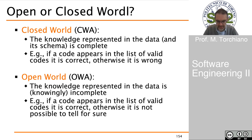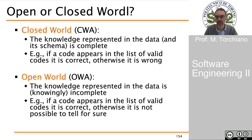When talking about accuracy, there are two possible approaches. One is the closed world assumption, where we assume we know all possible knowledge and the schema used to represent it, so if a value falls in the correct set of values it is accurate, otherwise it is not. The other is the open world assumption, where we do not know the whole knowledge and need specific rules or empirical approaches to decide whether a data item is accurate or not.